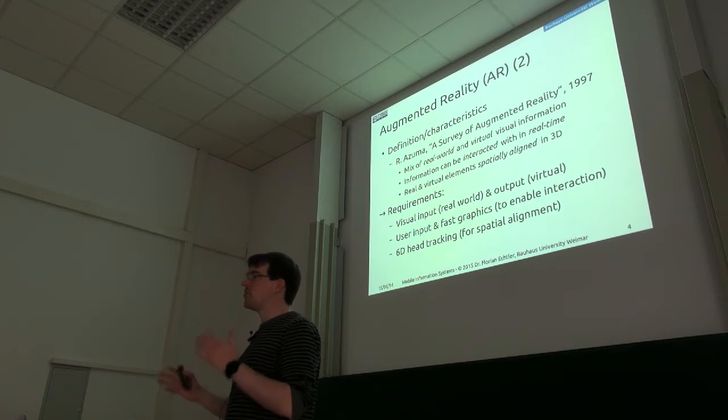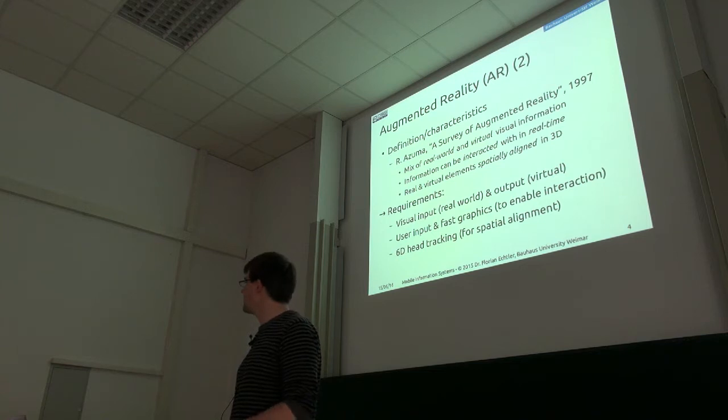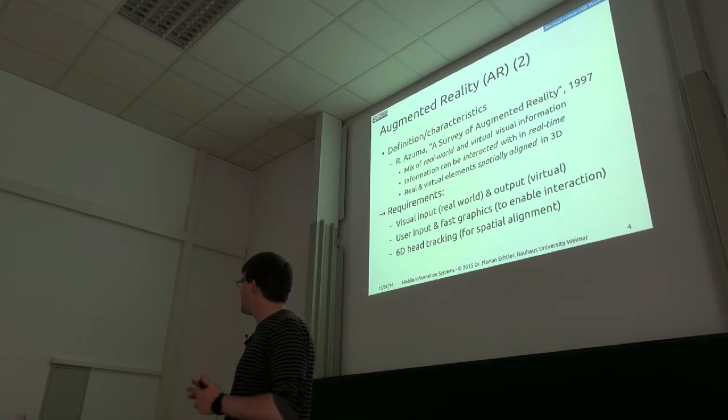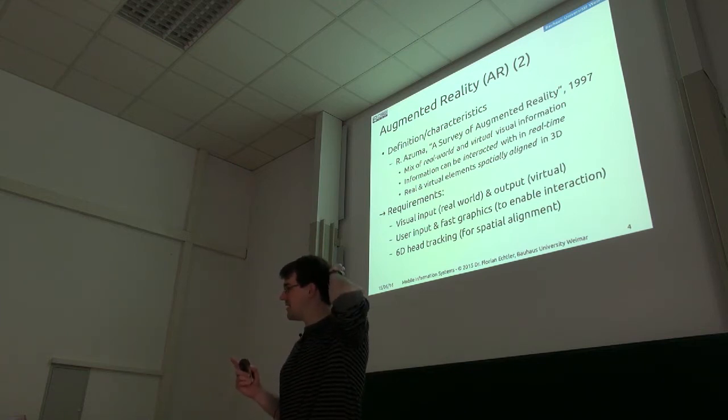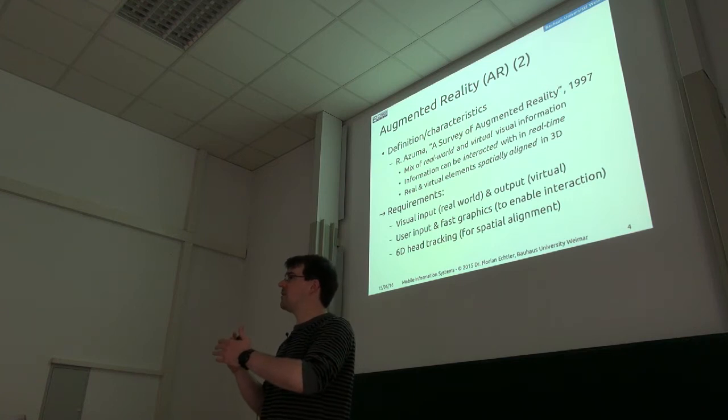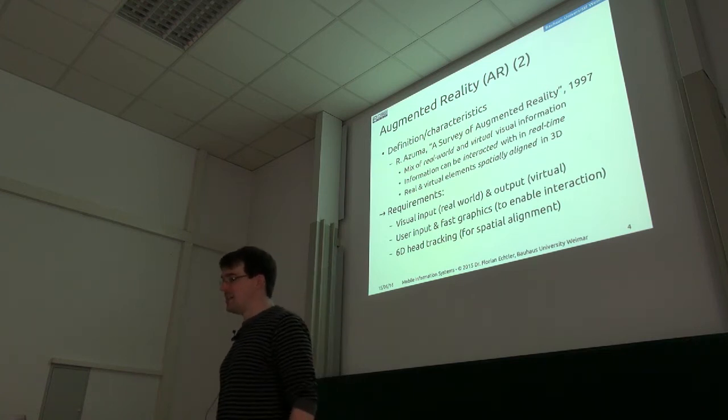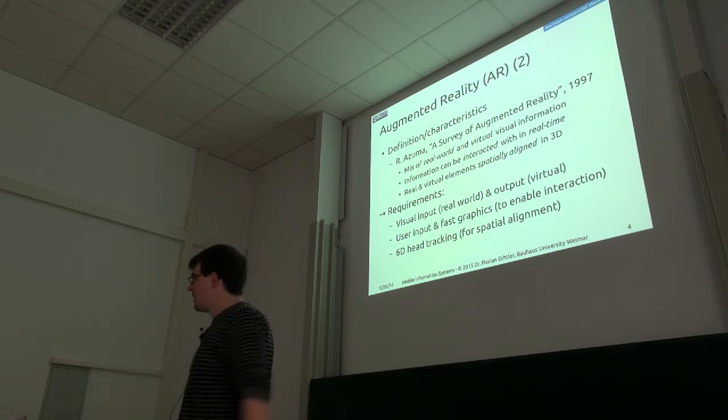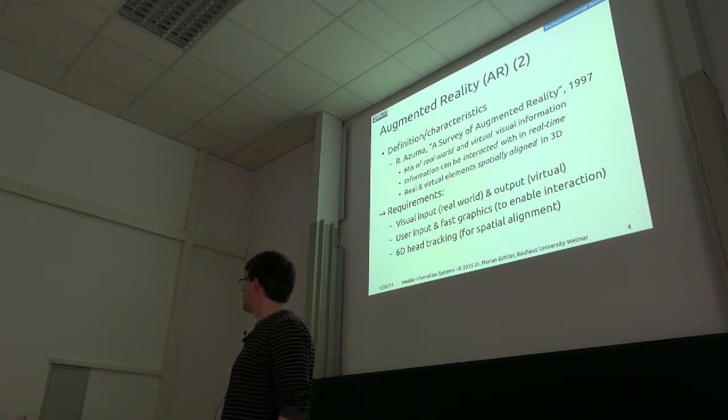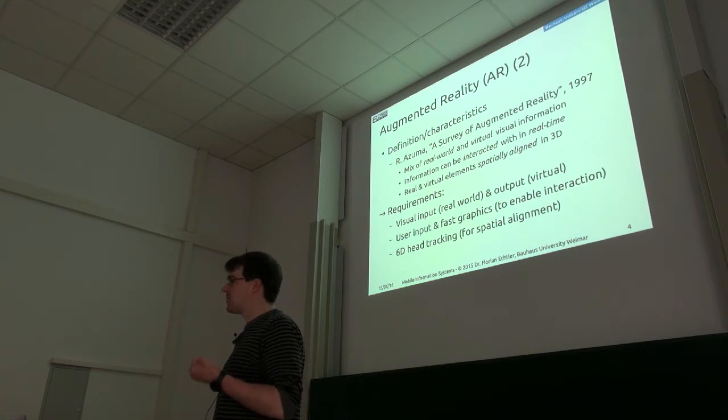And of course if we're looking at entirely virtual reality, then we have 100% virtual content. If you look at the real world, then we have 100% real content and anything in between is mixed reality, basically. So the agreed upon definition for any kind of augmented or mixed reality currently is that I have some mixture of both types of information. I can interact with the virtual information in real time and most importantly, the real and virtual objects are actually aligned with each other.